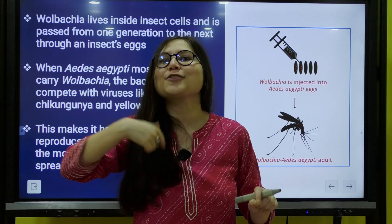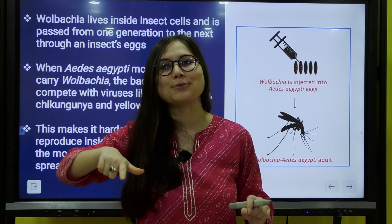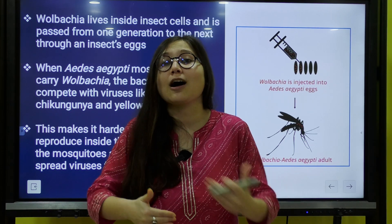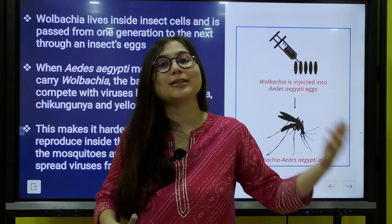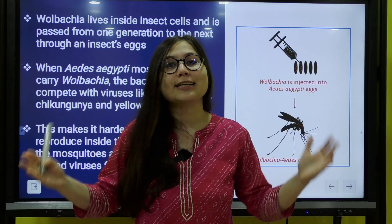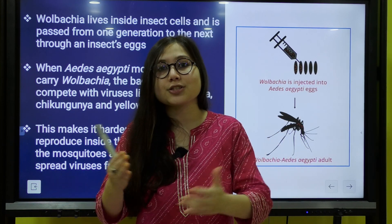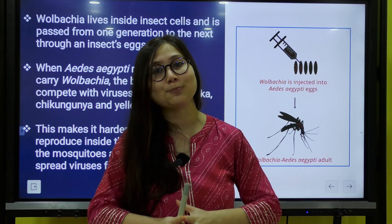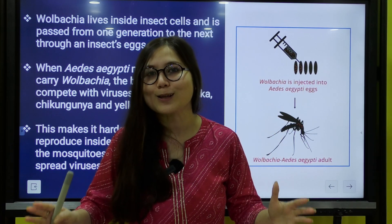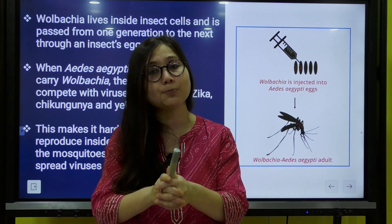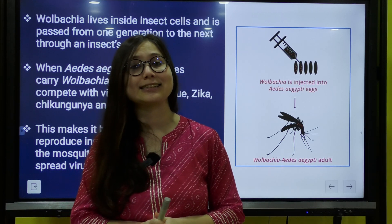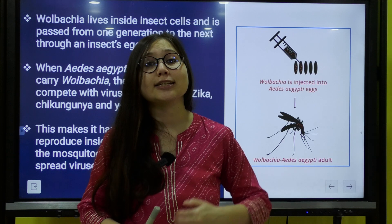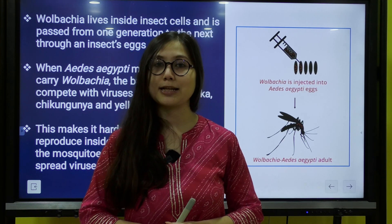This makes it harder for the virus to reproduce in the presence of the Wolbachia bacteria, and therefore it becomes harder for the mosquito to transmit viral diseases like Dengue, Chikungunya, Zika, and Yellow Fever among the human population. This is all about the Wolbachia method, and one point to note is that this method is not at all related to genetic modification or genetic manipulation.